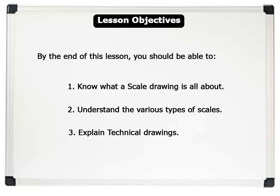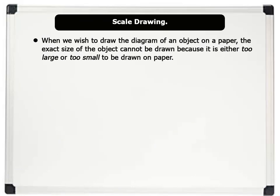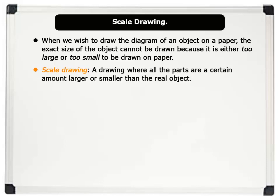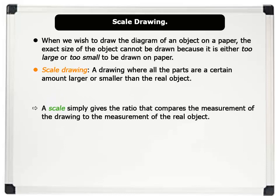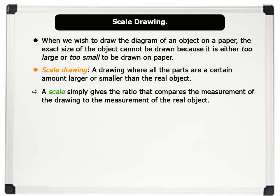Now, let us begin. When we wish to draw the diagram of an object on a paper, the exact size of the object cannot be drawn because it is either too large or too small to be drawn on paper. Hence, we use a scale drawing where all the parts of the drawing are a certain amount larger or smaller than the real object.